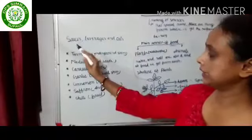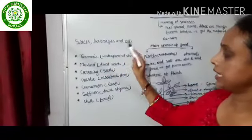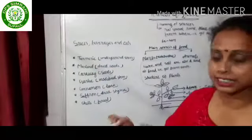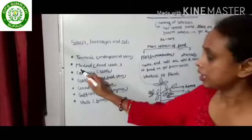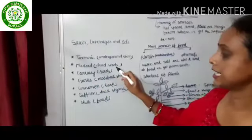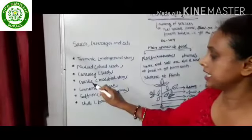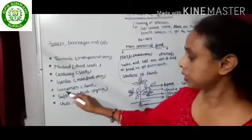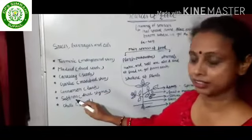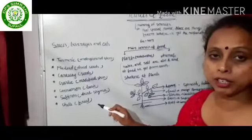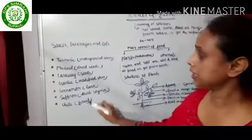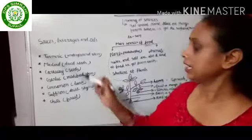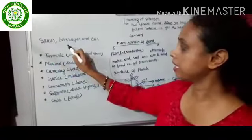Some other food sources include spices, beverages, and oils. For example, turmeric (haldi) is an underground stem; mustard (sarson) comes from dried seeds; garlic from a modified stem; cinnamon from the bark of a tree; and saffron from the dried stigma, which is a part of the flower. Chili is a fruit. Beverages include tea, coffee, juice, and other drink materials.